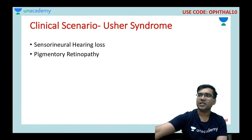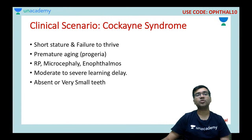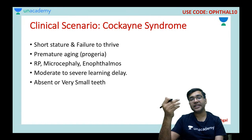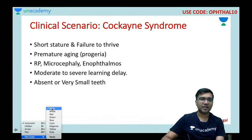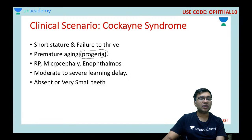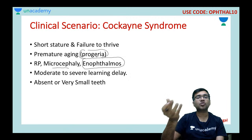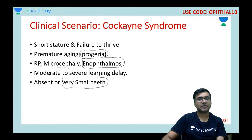In Usher syndrome, there is sensorineural hearing loss combined with pigmentary retinopathy. In Cockayne syndrome, the patient has short stature, failure to thrive, premature aging (progeria-like), microcephaly, enophthalmos (eyes sunken due to less orbital tissue), and very small teeth.